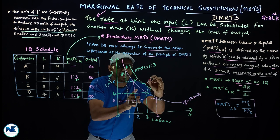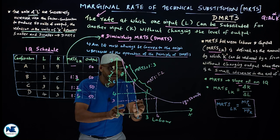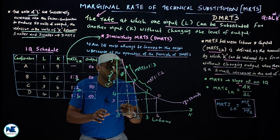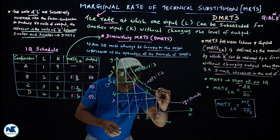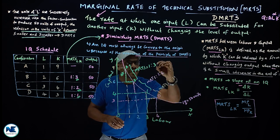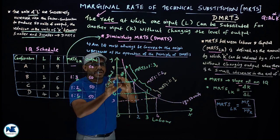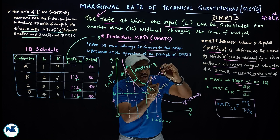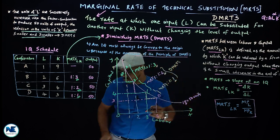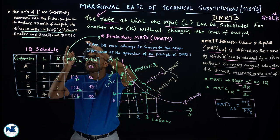Between C and D, the MRTS is 1:1. Initially MRTS was 3, then 2, then 1. The capital given up keeps reducing. The diminishing marginal rate of technical substitution is revealed as labor successively increases. This isoquant reveals that the reduction in capital becomes smaller and smaller.